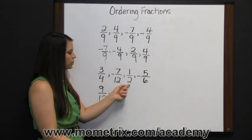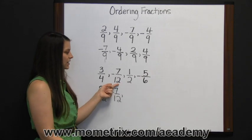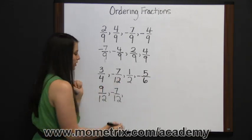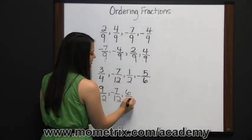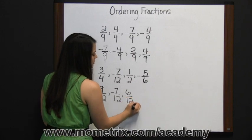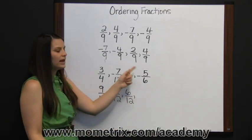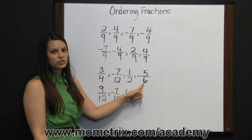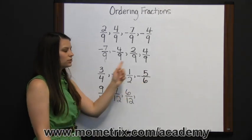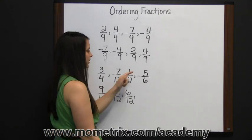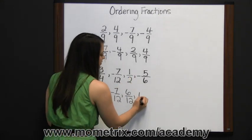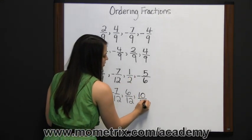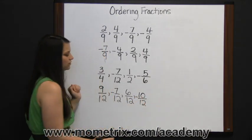One-half: two would need to be multiplied by six to get twelve, so we'll do the same to our numerator. One times six is six. Two times six is twelve. Negative five sixths: six would need to be multiplied by two to get twelve, so we'll do the same to our numerator. Five times two is ten, six times two is twelve, and of course it's still negative.